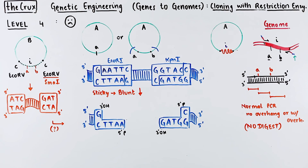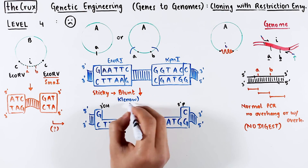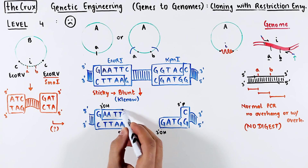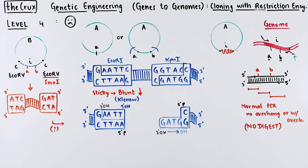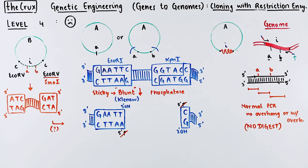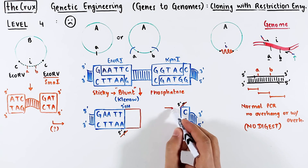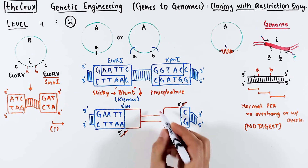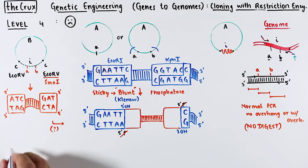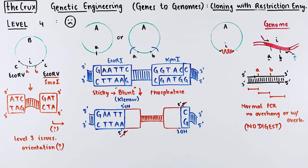The solution involves our friend Klenow. This enzyme will extend the 5' overhang and chew the 3' overhang, and the final result is a blunt finish. Blunt ends have the self-ligation issue we discussed in level 3, so you need phosphatase to prevent self-ligation. Now you can insert the EcoR5 or SMA1 digested insert into the vector. However, level 3 issues regarding the orientation of the insert still persist in level 4.